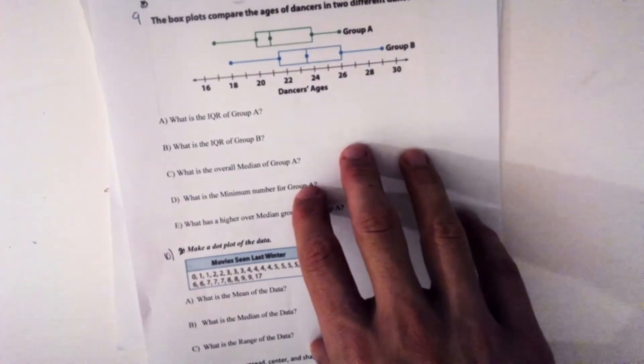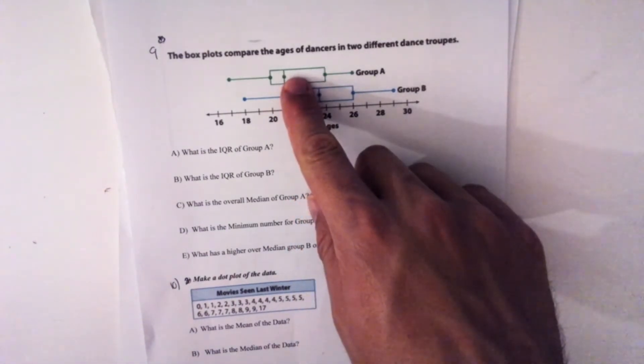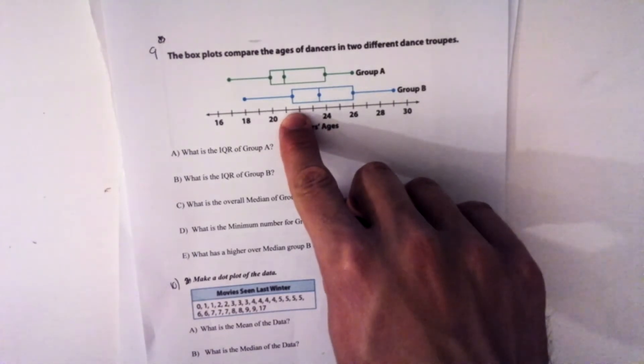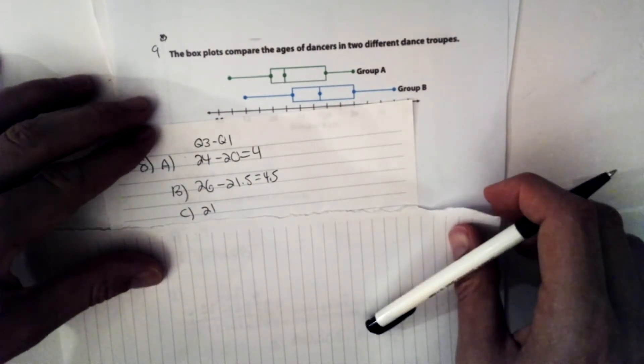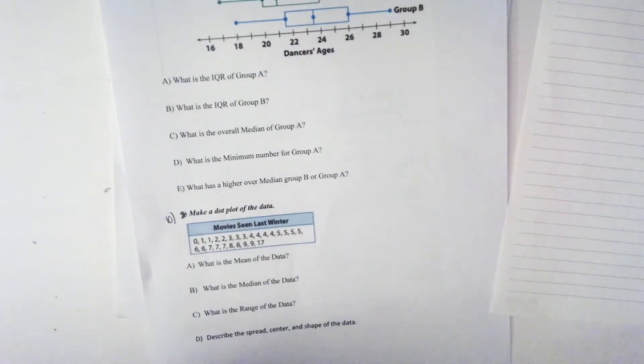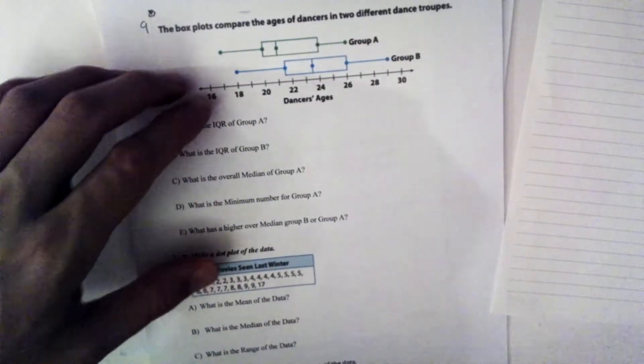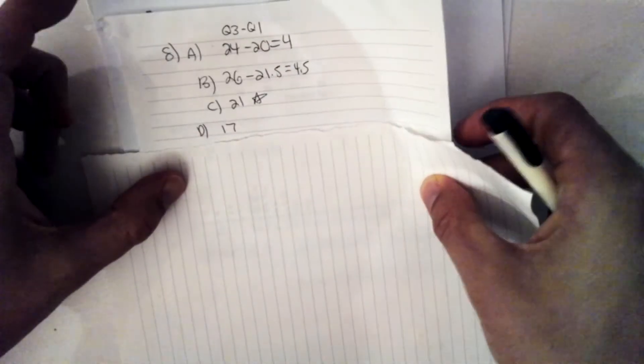So we're looking for the overall median of group A. So this is group A here. So I'll go over here to group A. And this is the median, the middle. And I'll go down to here. And it looks like it's going to be 21. So my overall median for number C is 21. D. What is the minimum number for group A? So I'm going to look up here. And I see that the lowest point is 17. So then my answer for number D is 17.